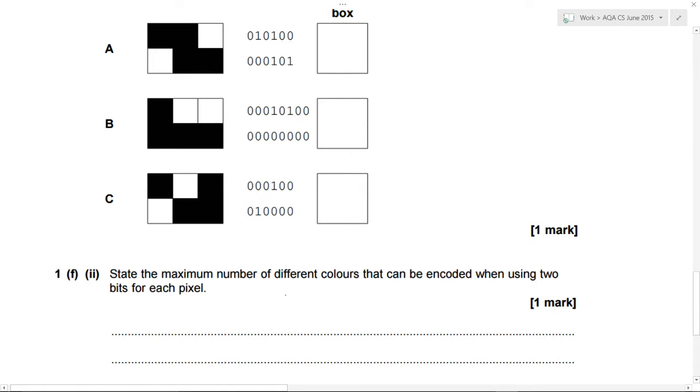In this question we need to work out what the maximum number of different colors that can be encoded when using two bits per pixel in an image.